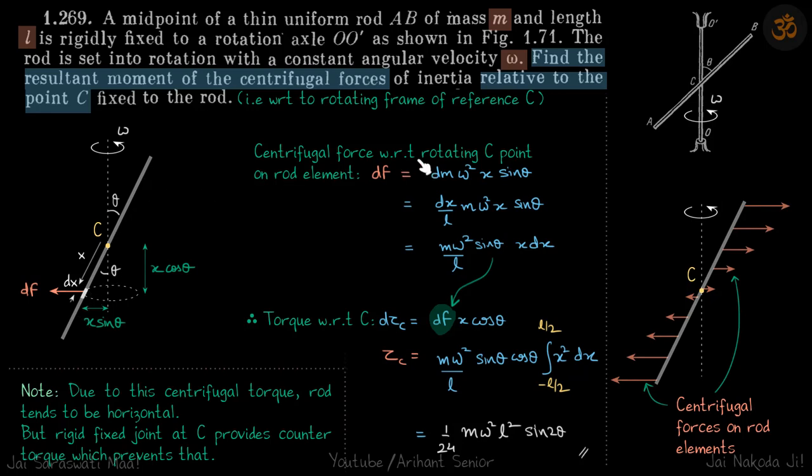Acting on this rod. So, centrifugal force with respect to rotating C point of the rod: the centrifugal force dF is dm times omega squared times x sin theta, because the radius it's traveling in is x sin theta. Mass m is dm, and acceleration is omega squared x sin theta. So dm we can write as dx by L into m and simplify that.